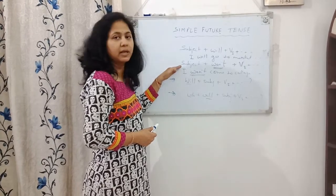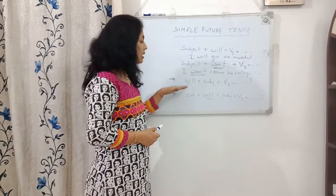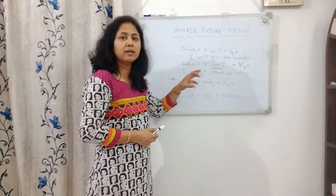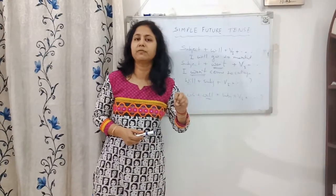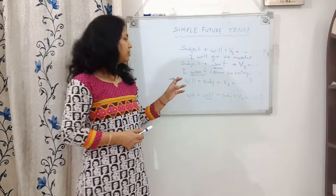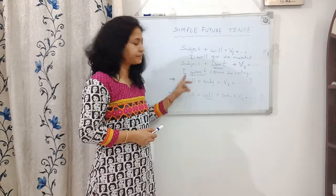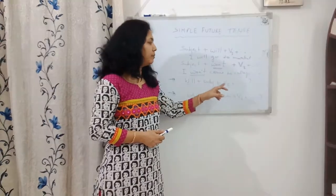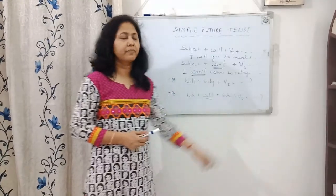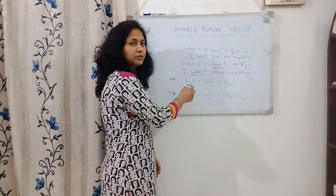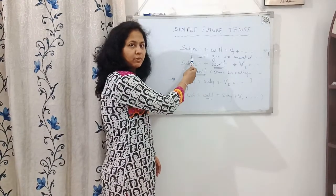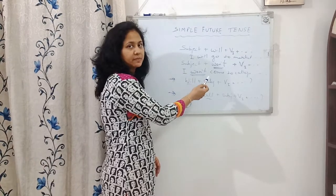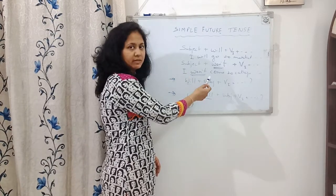If we need to ask questions about the future — questions where we just need to confirm information — the question will begin with 'will.' For example: Will you come tomorrow? Will they perform in the event? For such questions, the answer will be: Yes, they will perform in the event — or negative: No, they won't perform in this event.